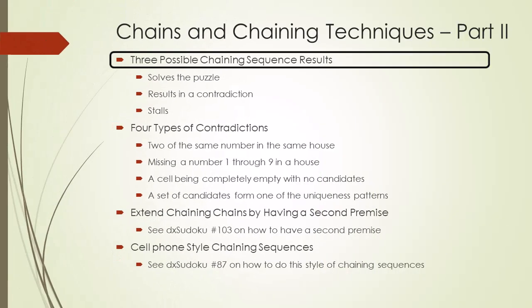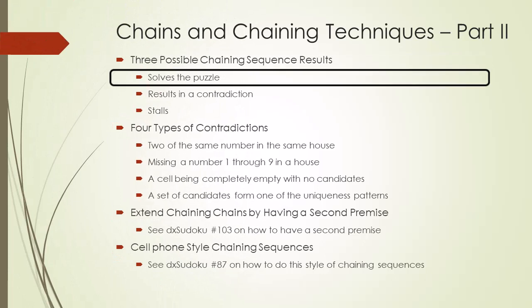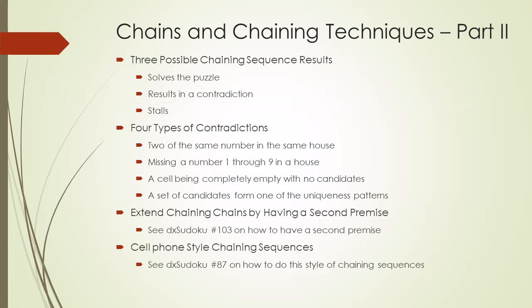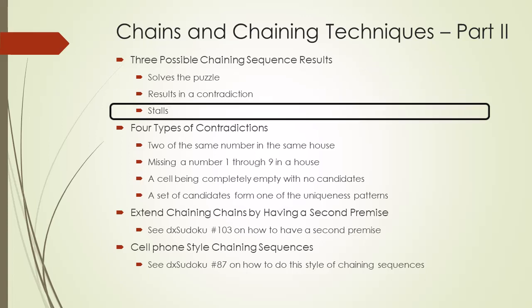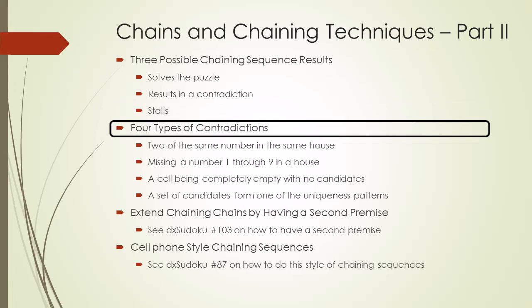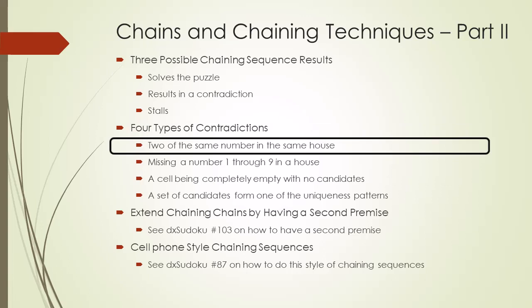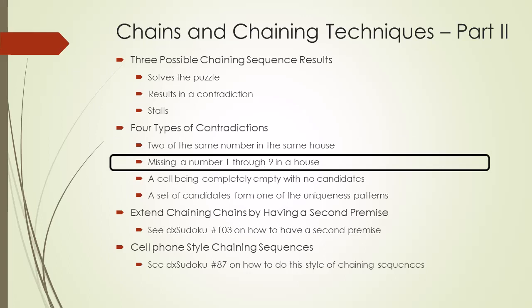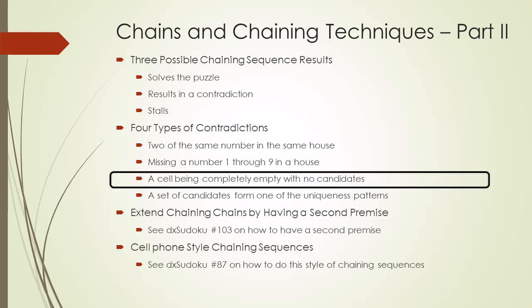There are three possible results for a chaining sequence. The first is the chaining sequence solves the puzzle. The second is the chaining sequence results in a contradiction. And the third is the chaining sequence stalls — meaning there are no more weak or strong links to continue. There are four types of contradictions: two of the same number within the same house; one of the numbers 1 through 9 missing from a house; a cell is empty or all candidates have been removed by strong links; and remaining candidates forming a uniqueness pattern.